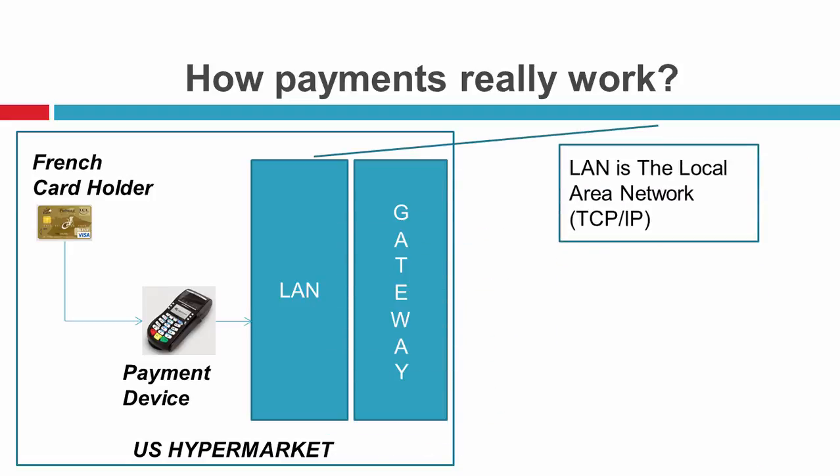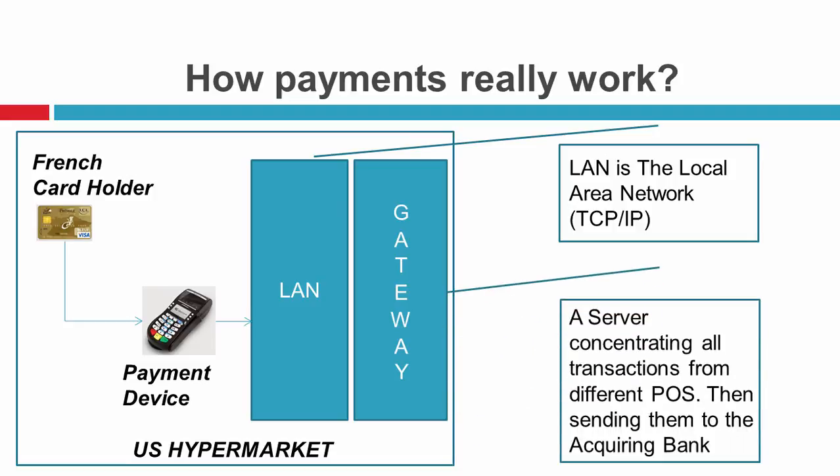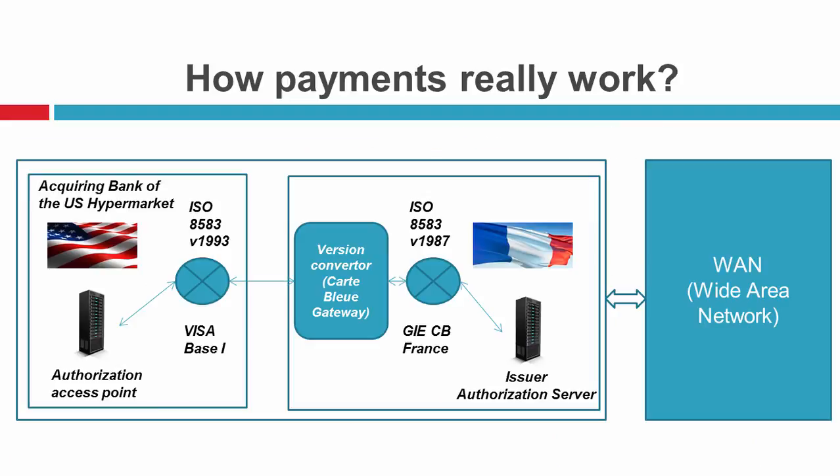The LAN is the local area network that transmits the transaction data to the gateway. The gateway is a kind of server concentrating all transactions from different points of sale, then sending them to the acquiring bank. The acquiring bank is the bank of the US hypermarket.